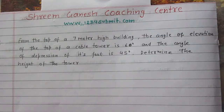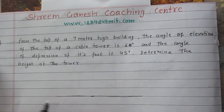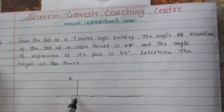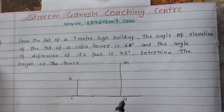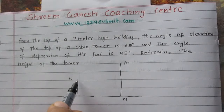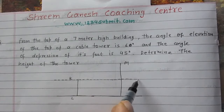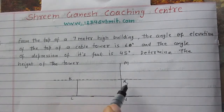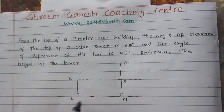Let us understand this situation diagrammatically. Consider the ground level, where line segment KL represents the building and line segment MN represents the tower. The angles are measured from point K, the top of the building. The normal eye level through this point is horizontal and parallel to the ground. So line segment KR is parallel to line segment LN, and both KL and RN are perpendicular to the ground level.